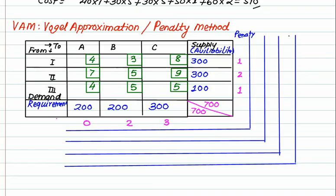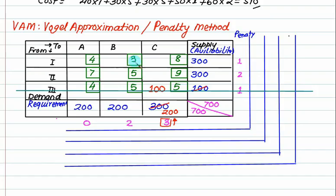Collect the penalty for each row and column. The maximum penalty equals 3 in this column. Search for the minimum cost in that column and allocate the maximum of demand or supply. Now calculate the next penalty: lowest cost is 3, next is 4, so penalty is 1. Second row: 5 and 7, penalty is 2. Maximum penalty is 3 — look into this column. The minimum cost is 4. Out of 200 and 300, can we allocate 200?